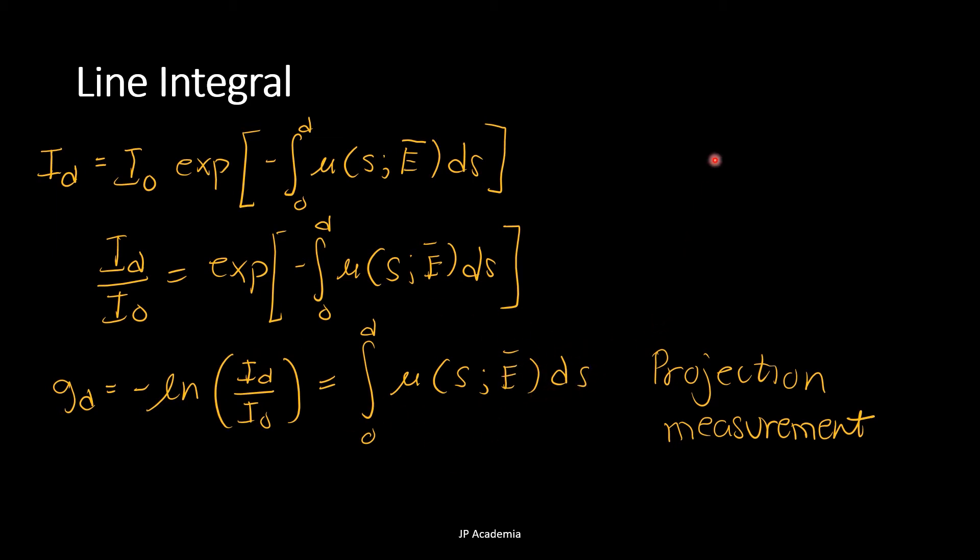With this, we can see that the basic measurement of CT is a line integral of the linear attenuation coefficient at this effective energy. This reference intensity I sub naught is measured for all the detector elements during the calibration step of the machine. This is commonly called the air calibration, done usually in the morning.